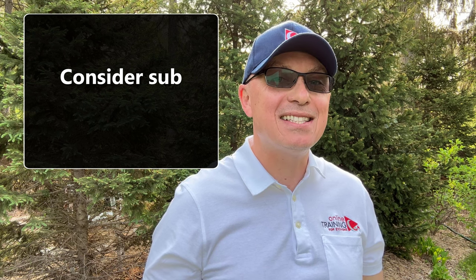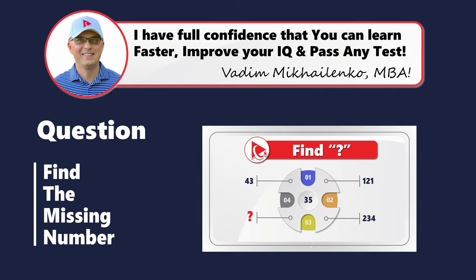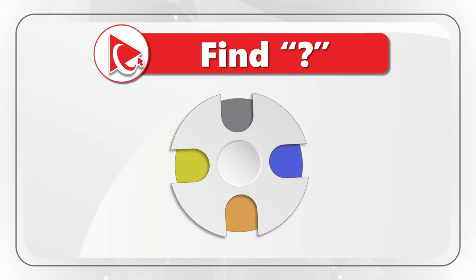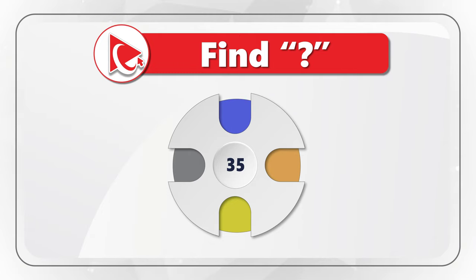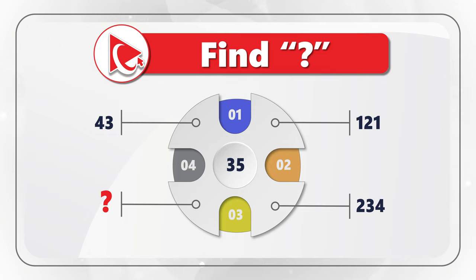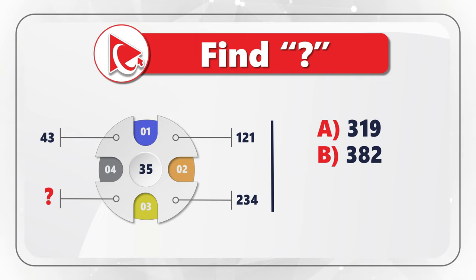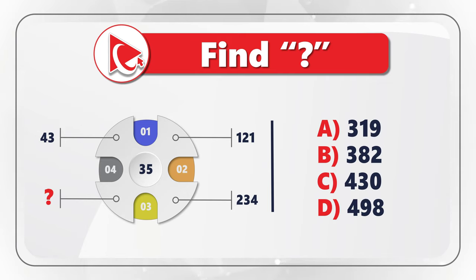Here's a very interesting question where you're presented with an unusually looking shape and you need to find the missing number. Looking closely at the shape, there is a number in the middle which is 35. There are numbers inside the internal circle, and they are sequential: 1, 2, 3, and 4. The numbers start and grow at 11 o'clock. The first number is 43, the second is 121, the third is 234, and then comes the missing number. You need to select the missing number from four choices: A) 319, B) 382, C) 430, D) 498.